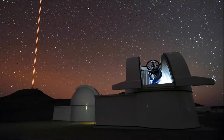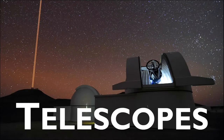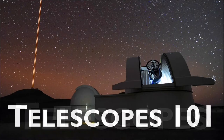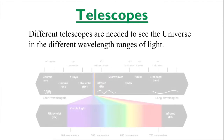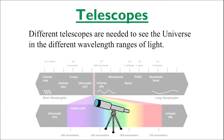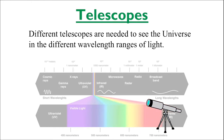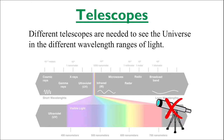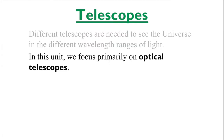Let's find out some more about the thing that brings the skies to us — the telescope. Before we can look into the different types, there are some basics we need to cover to understand why astronomers use telescopes and how they work. Different telescopes are necessary to see the universe in the different wavelengths of light. A telescope designed for visible light will be ineffective in the IR range, nor will it work for gamma rays. In this unit, we'll primarily focus on telescopes that work in the visible range, which we call optical telescopes.